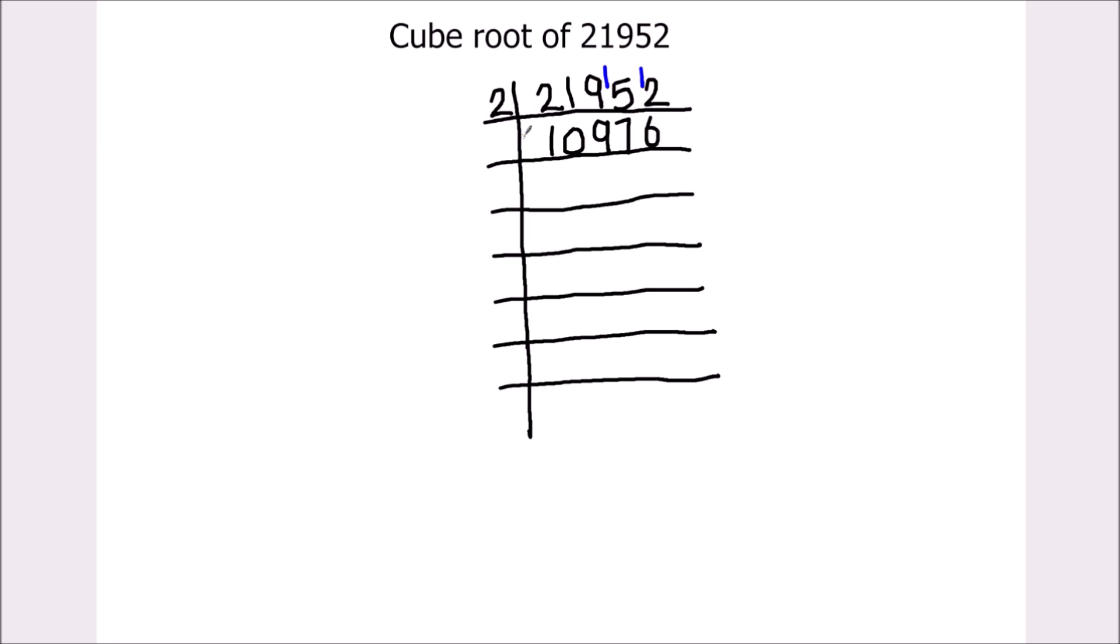Again we can divide it by 2. 2 times 5 is 10. 2 times 4 is 8. 1 is remainder. The next number becomes 17. 2 times 8 is 16. 1 is remainder. This becomes 16. 2 times 8 is 16.